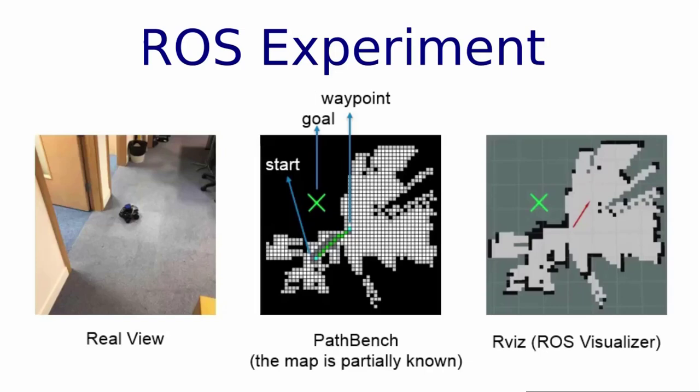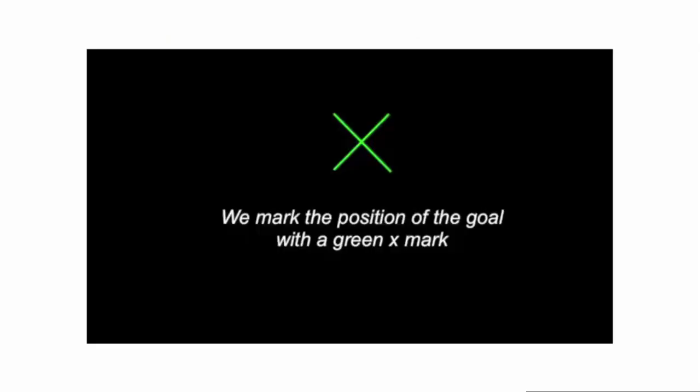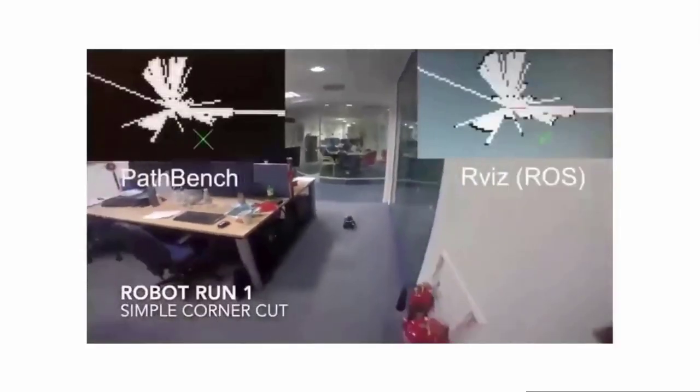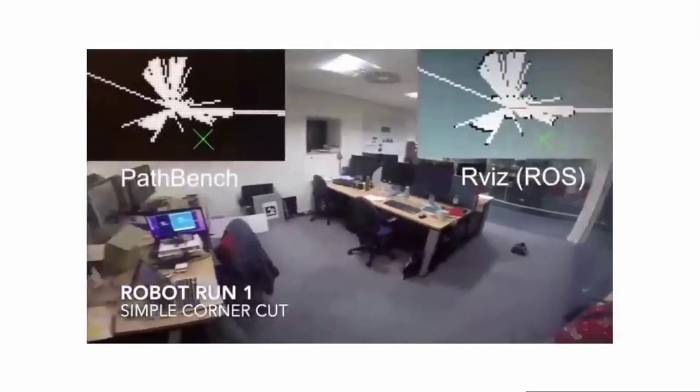Here are three experiments in the real world with partial maps, where WPN successfully navigates to the goal points. In all cases, the goal point is marked with a green cross sign. We use PathBench and ROS to run these experiments.